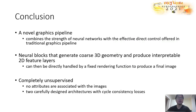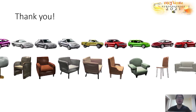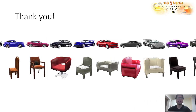To conclude, we present a novel neural graphics pipeline that combines the strength of neural networks and the traditional graphics pipeline. The proposed method first generates coarse 3D shapes, and then decorates them with interpretable intermediate maps in 2D domains for producing the final images. It is worth noting that the method is trained in an unpaired data setting, with two carefully designed cycle-consistency networks. That will be all for my presentation today. Thanks so much for your time.